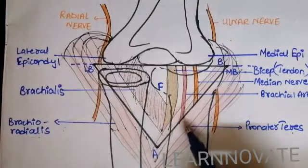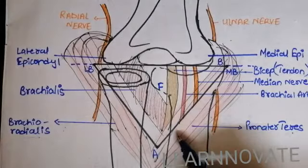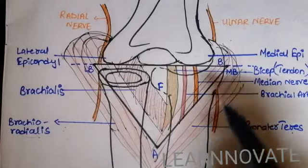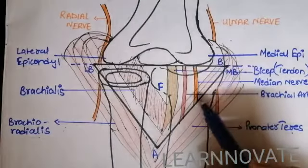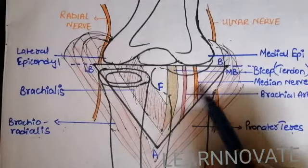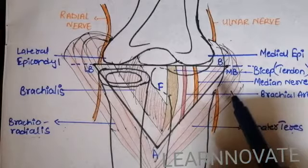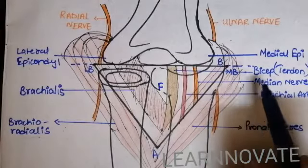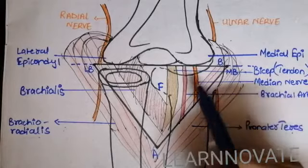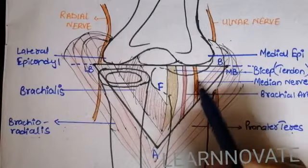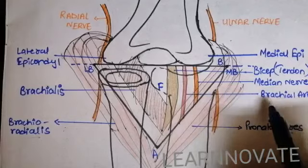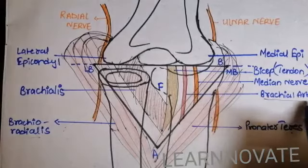Coming to the contents of the cubital fossa, starting from lateral to medial. The contents of the cubital fossa include the nerve that we call as the median nerve, that is the major nerve for the flexors of the forearm and the hands. Then, coming more medial, is the presence of the artery that we call as the brachial artery.